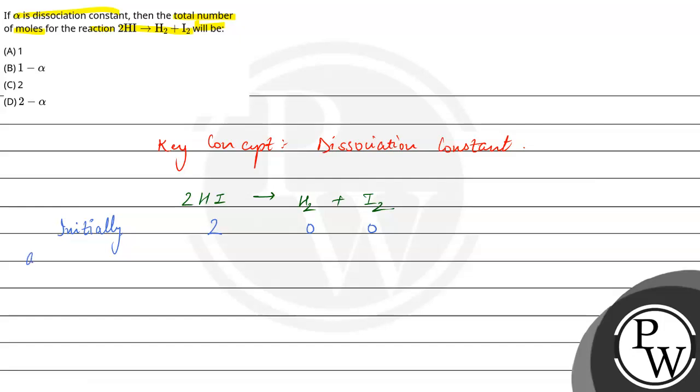So when at time t, at any time t, the number of moles will be 2 minus alpha. Where alpha is what? Dissociation constant given in the question.